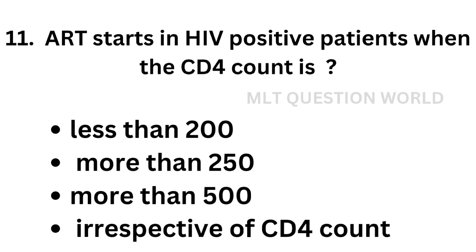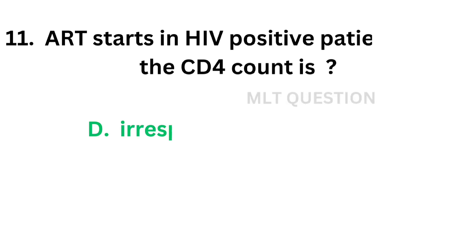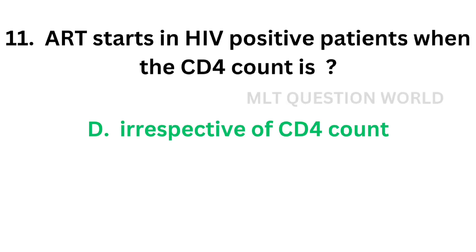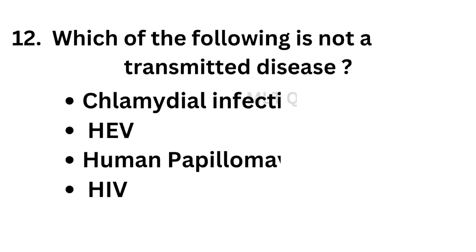Question number 12: Antiretroviral therapy starts in HIV positive patients when the CD4 count is — option A, less than 200; option B, more than 250; option C, more than 500; option D, irrespective of CD4 count. The correct answer is option D, irrespective of CD4 count. ART in HIV positive patients starts irrespective of CD4 count.